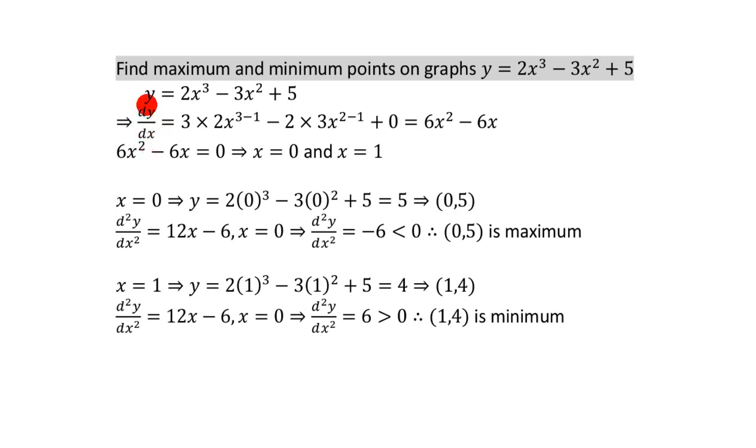Now, dy by dx, which represents the formula for the gradient, is got by differentiating this. How do you differentiate that? You bring the power forward, so you times it by the power when it goes forward. So that 3 goes there. You get 3 times 2x cubed, but not cubed because you take away 1 from the power. So, this becomes 6x to the power 2.